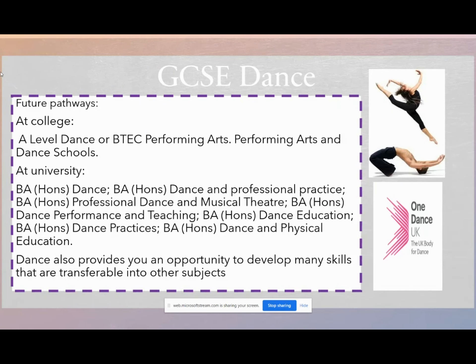If you've taken GCSE dance, it's worth thinking about what your future pathways could include. If you want to continue studying in the performance sector, then A-level dance or BTEC performing arts are an option at sixth forms. There are also performing arts and dance schools that specialise in specific elements of the sector. At university, there are many pathways you can follow, including a degree in dance or dance and professional practice. You can combine dance and drama, look at dance performance and musical theatre, and there's also the option of looking at dance within education.